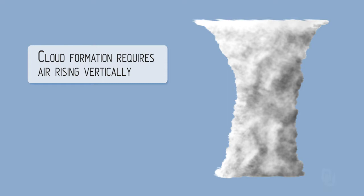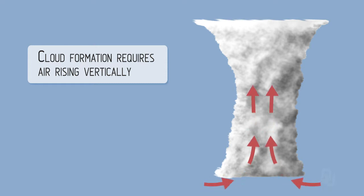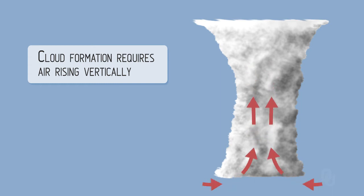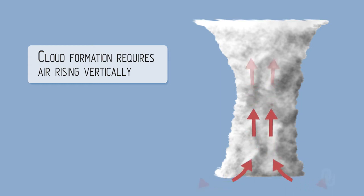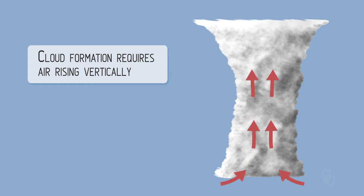To form a cloud, you need air rising vertically somehow. It may be the heat — the atmosphere heating up — could be a front. If you live near a mountain, it might be the mountain that causes it. So some type of forcing forces the air to go up. It can happen because of the heating of the air at the Earth's surface, or maybe converging winds coming together — it's got to go somewhere, so it goes up.